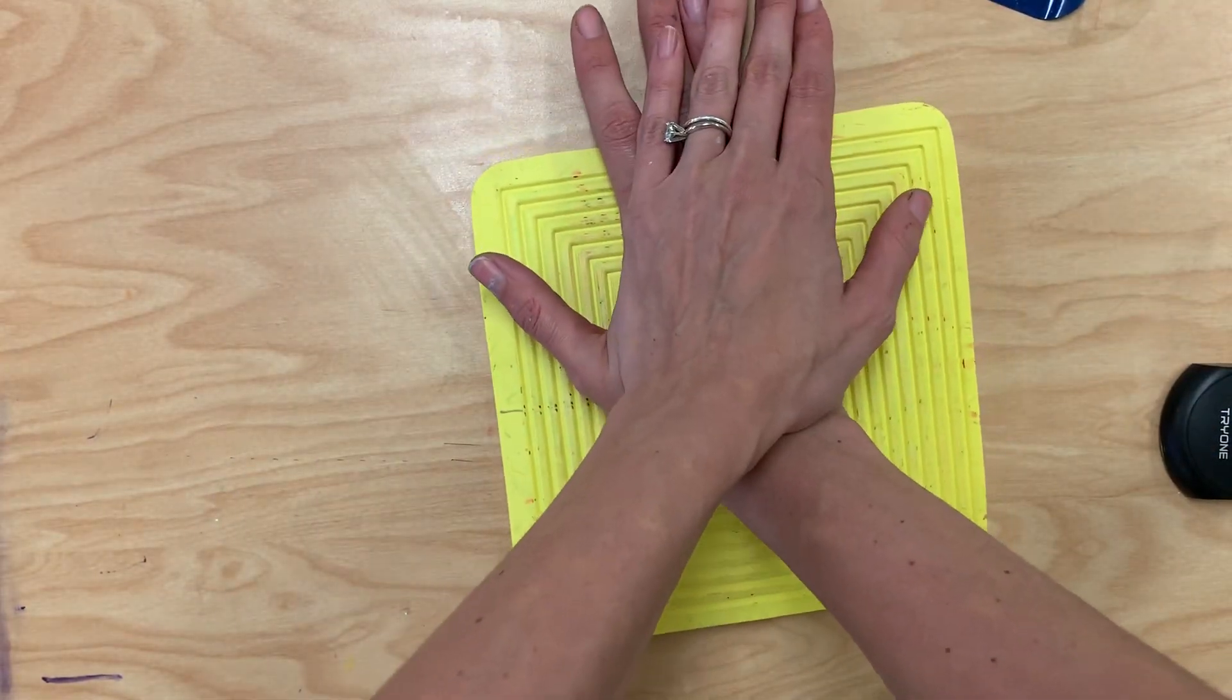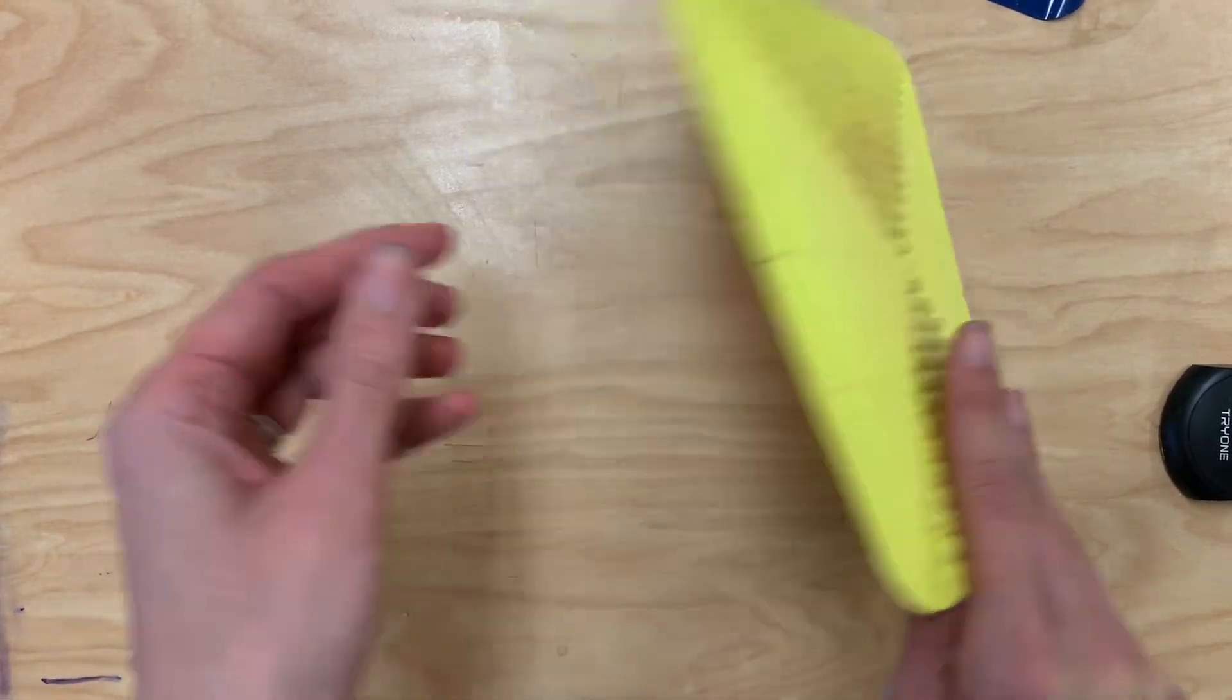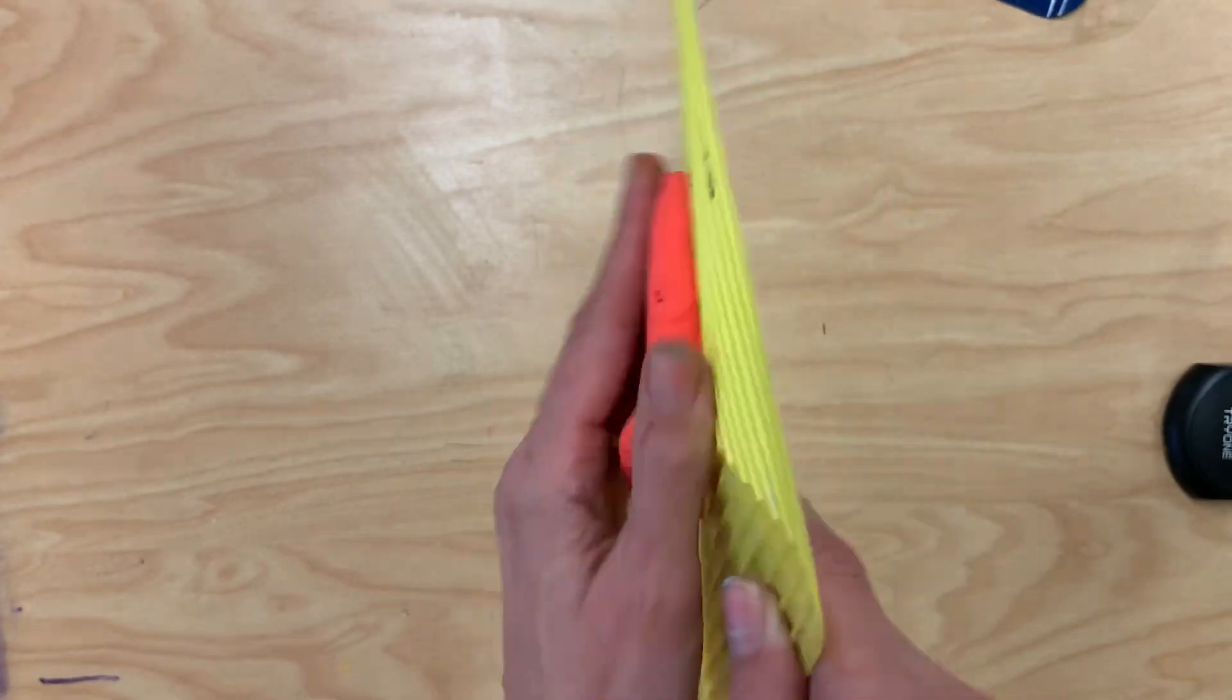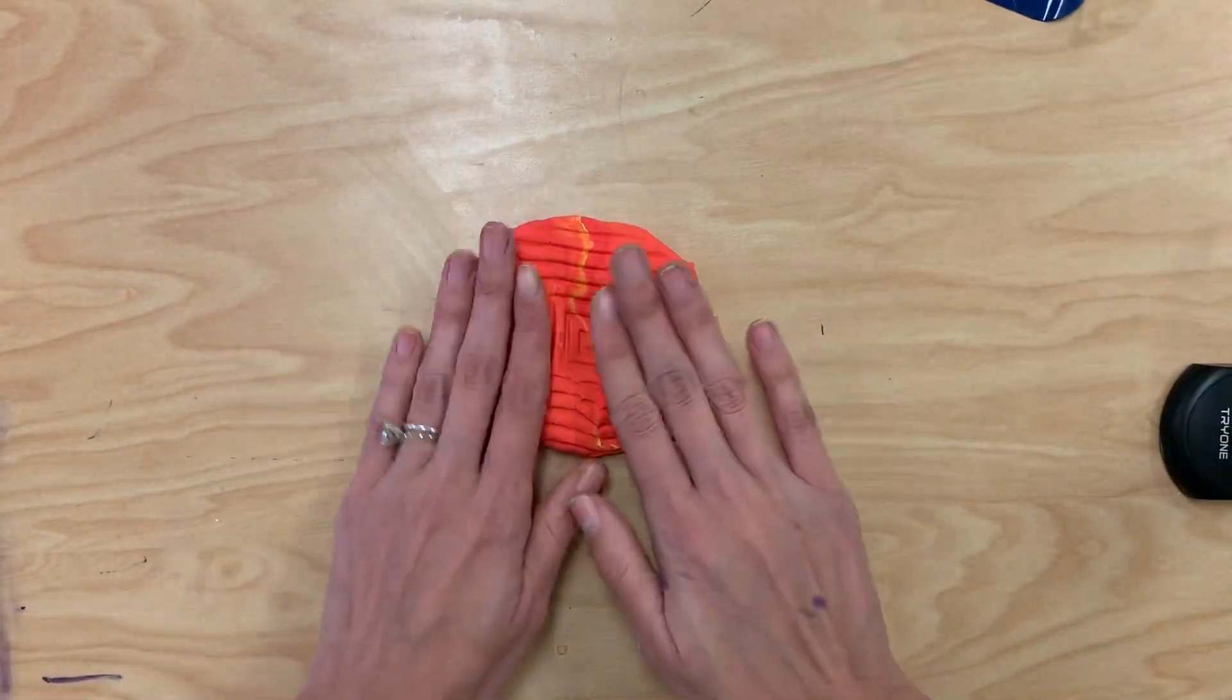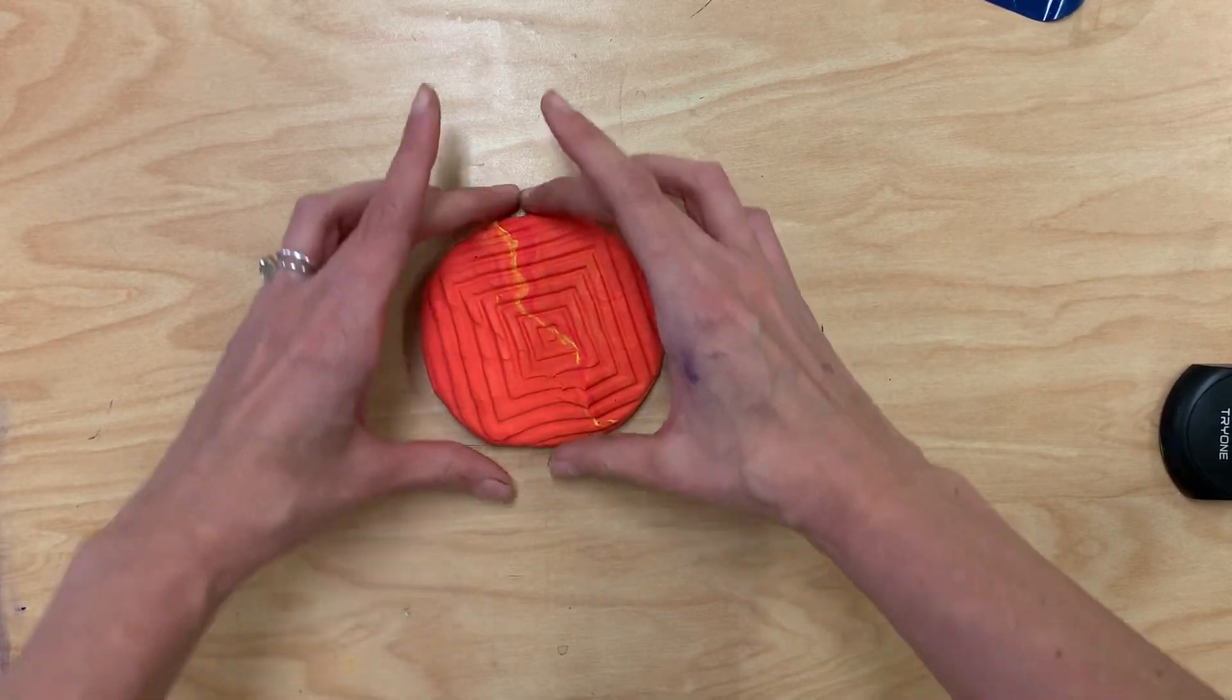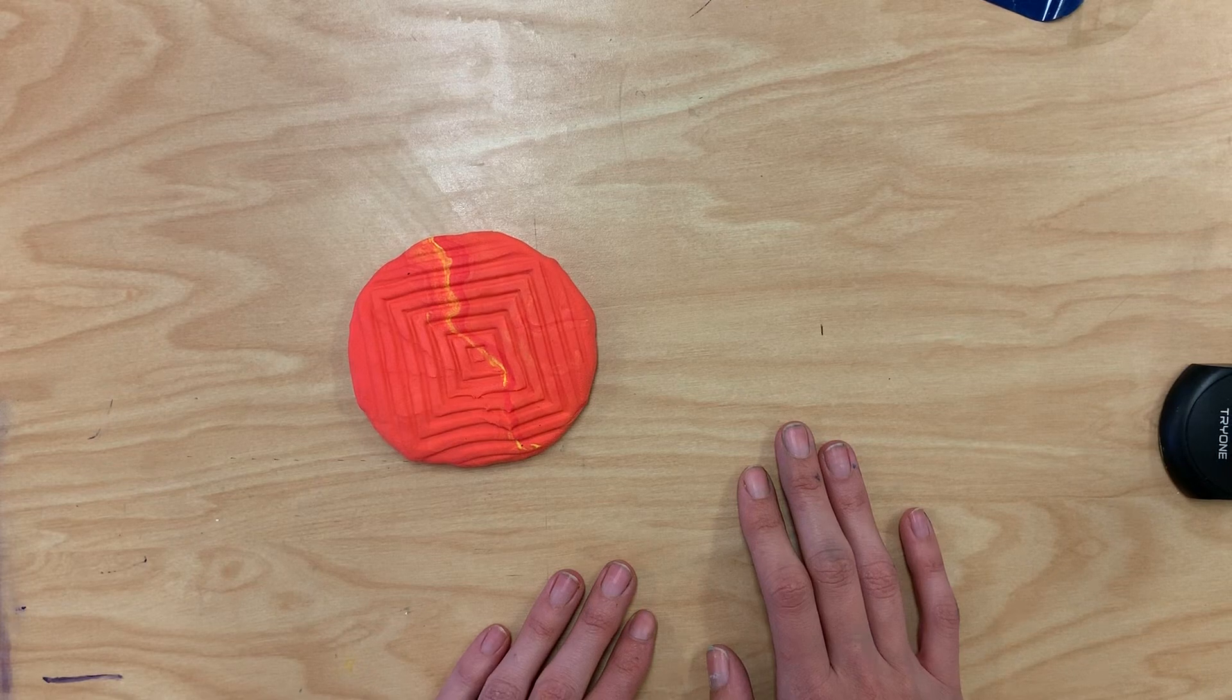I'm going to press down against it, and when I peel it off I'll be left with a texture on this side. So I have this sort of circle shape, and from this we're actually going to create a pumpkin.